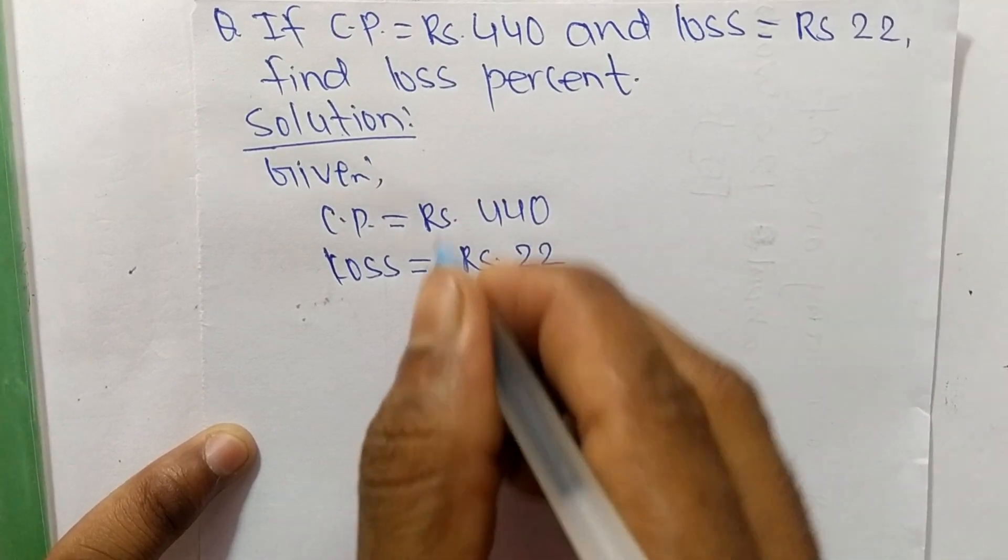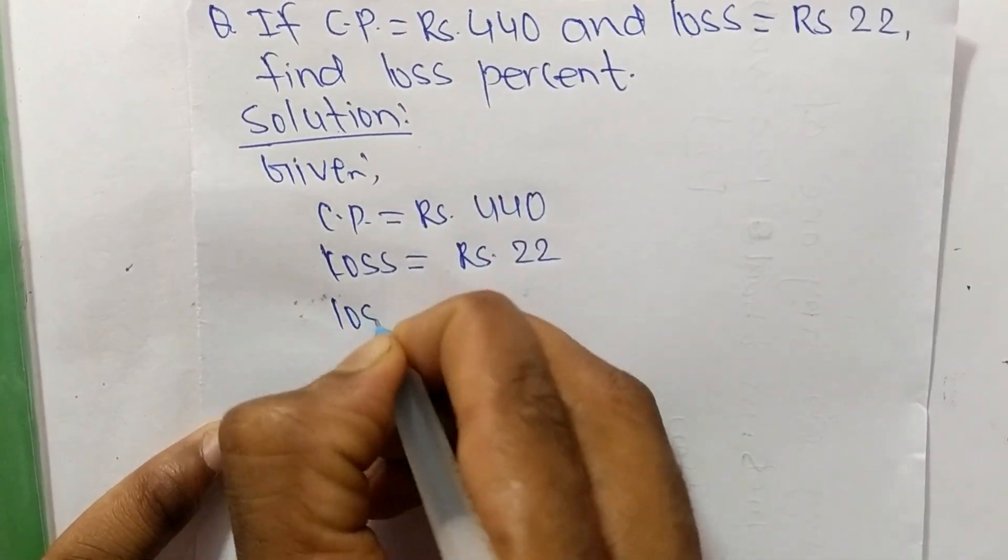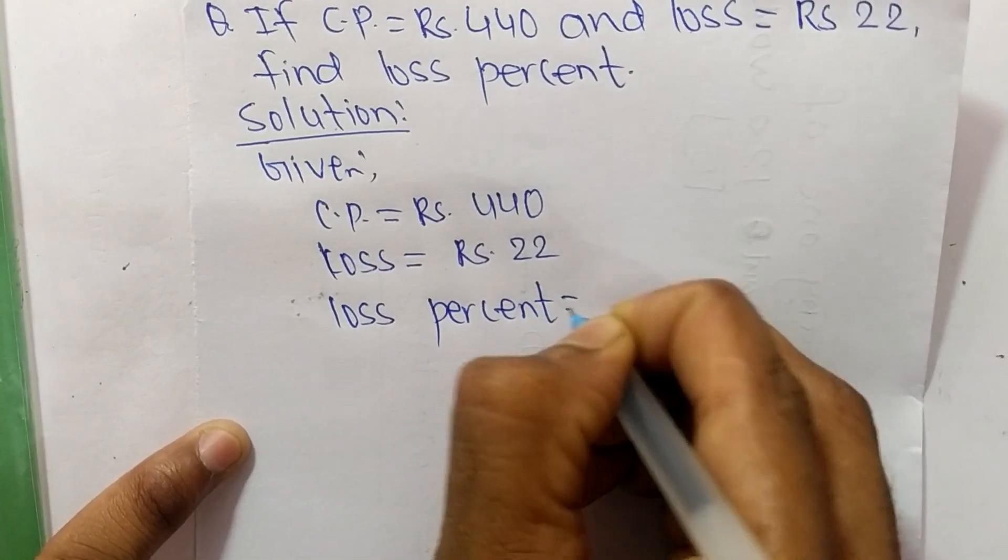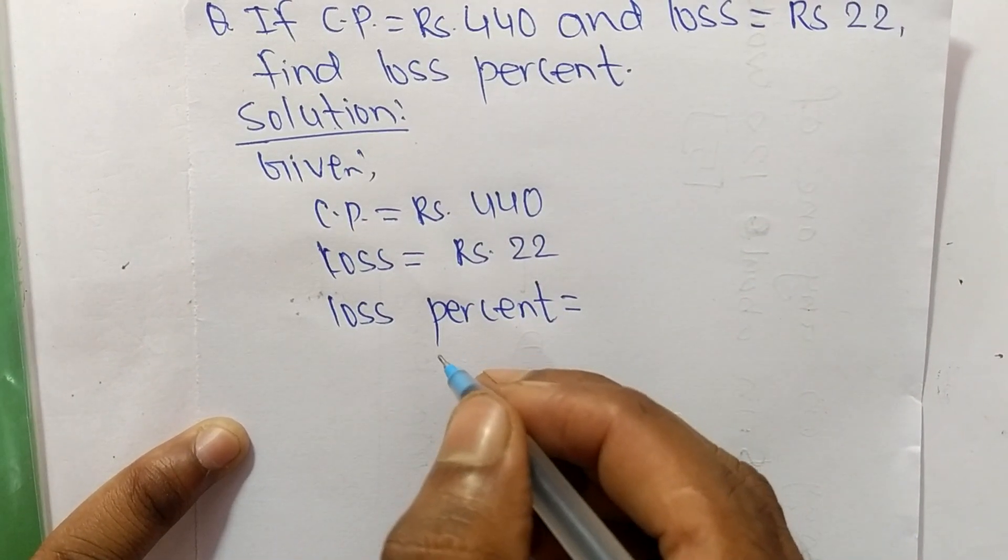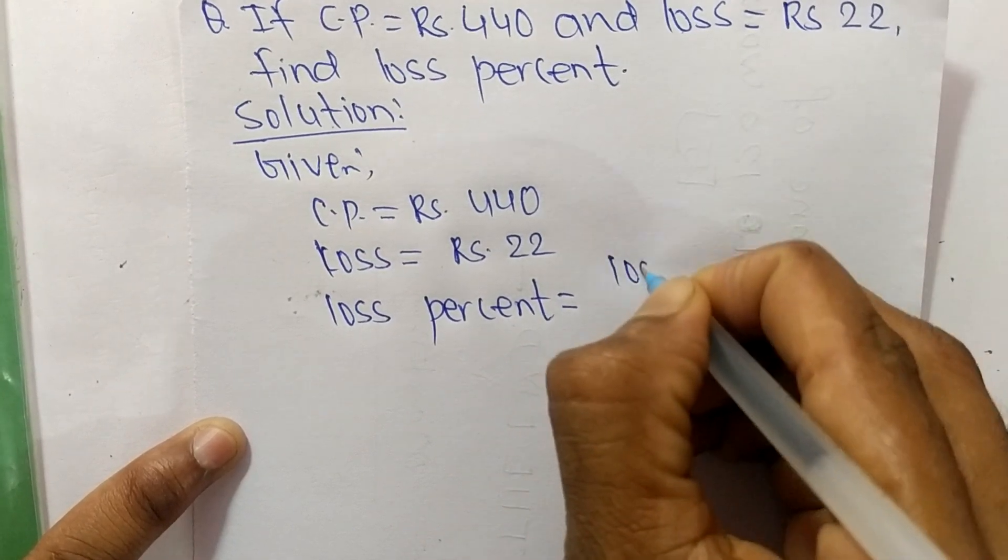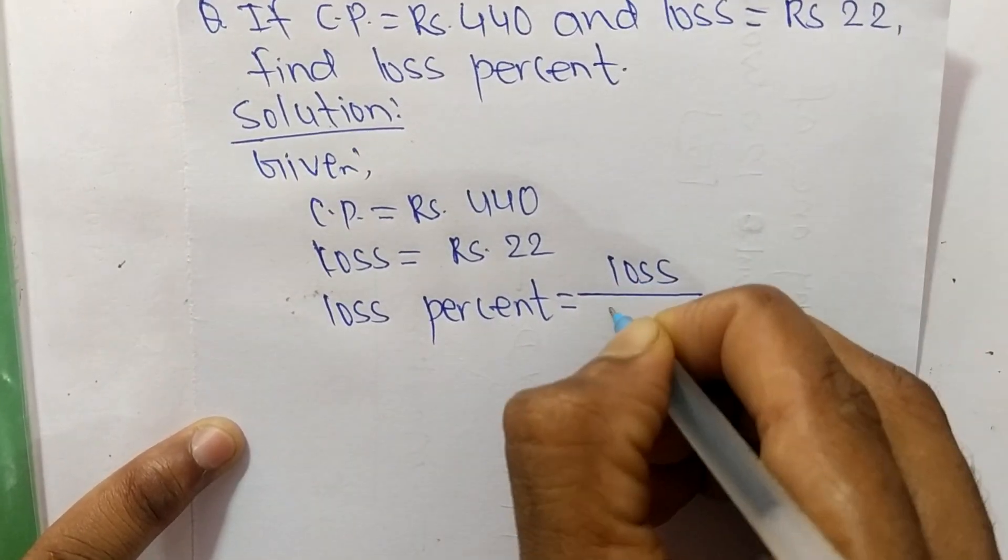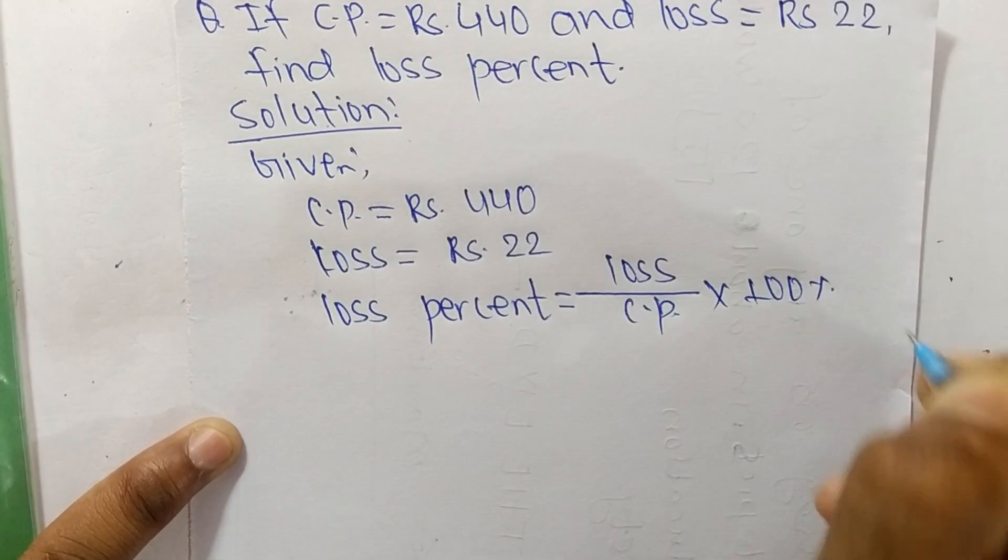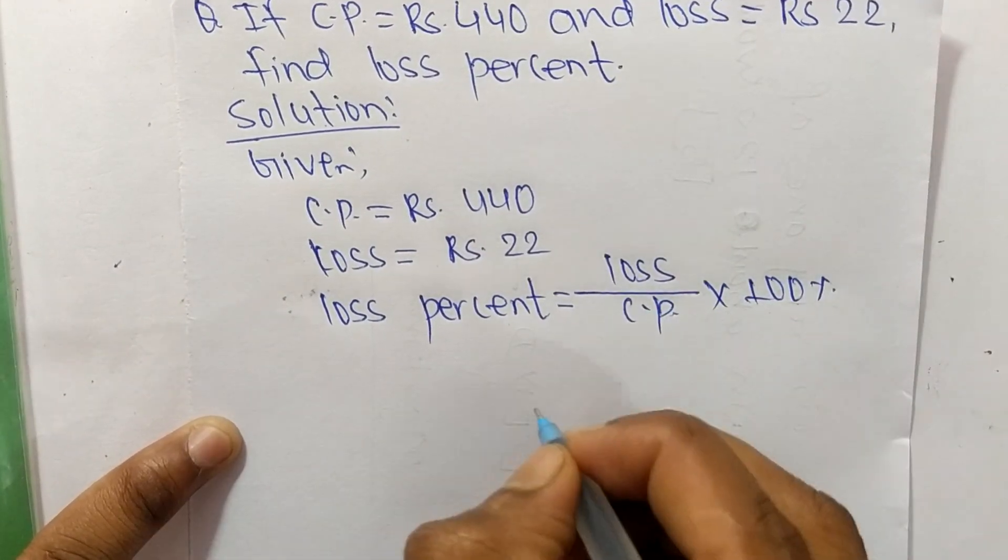And we have to find out loss percent. So to find out loss percent first you have to use its formula, and its formula is actual loss by CP into hundred percent. So this is the formula.